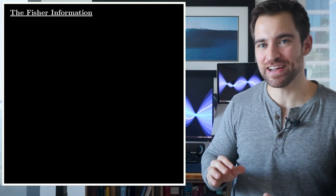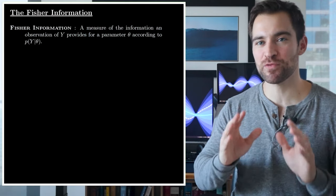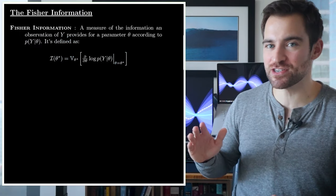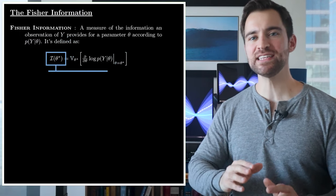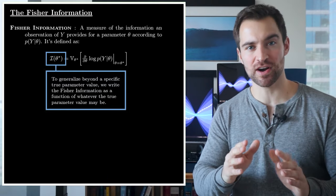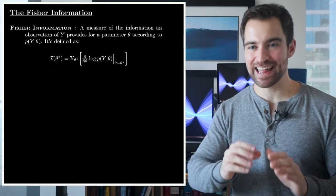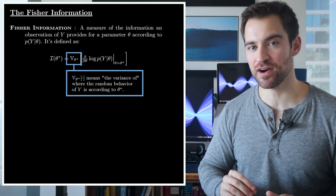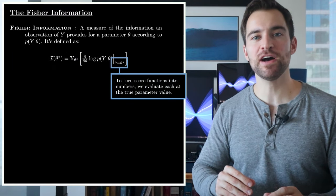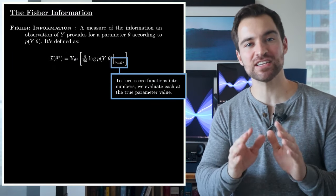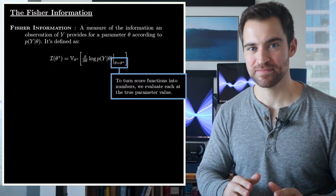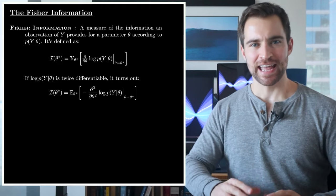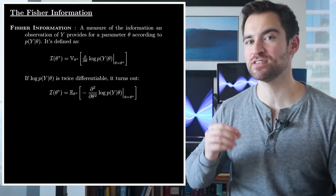Ready? Okay. The Fisher information is a measure of the amount of information an observation of a random variable carries about a parameter according to the probability function that relates them. It's defined with this expression, which I'll break down. First, we write it as a function of a true parameter value, which is theta star, to generalize it beyond a specific true parameter. Second, this means the variance of something that depends on y, where the random behavior of y is according to that theta star. Third, this means we'll be evaluating each score function at the true theta, giving us a bunch of numbers of which we are interested in their variance. And as we mentioned, the variance turns out to be equal to the negative expected value of the second derivative. These two expressions communicate everything we covered with those six panels we saw earlier.